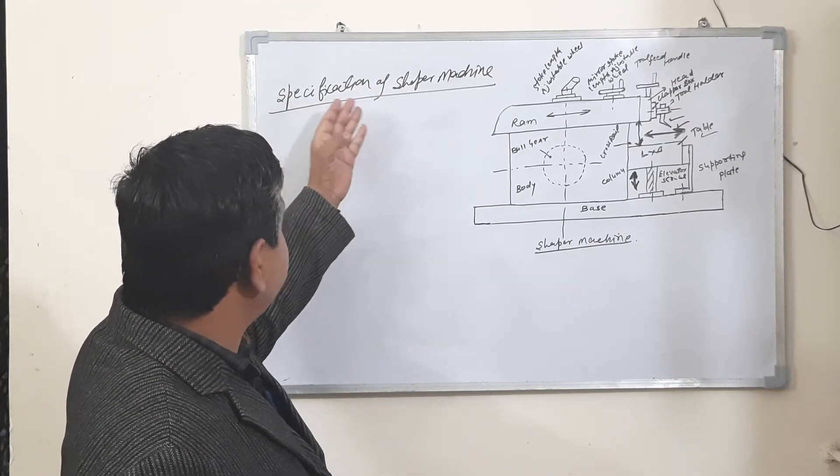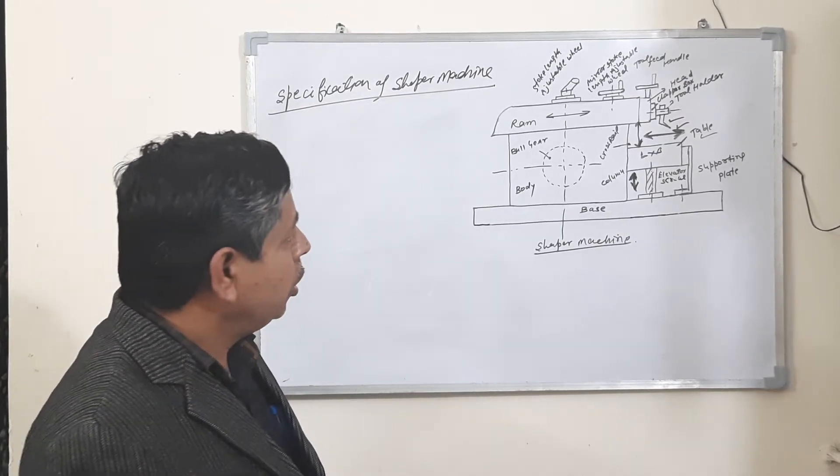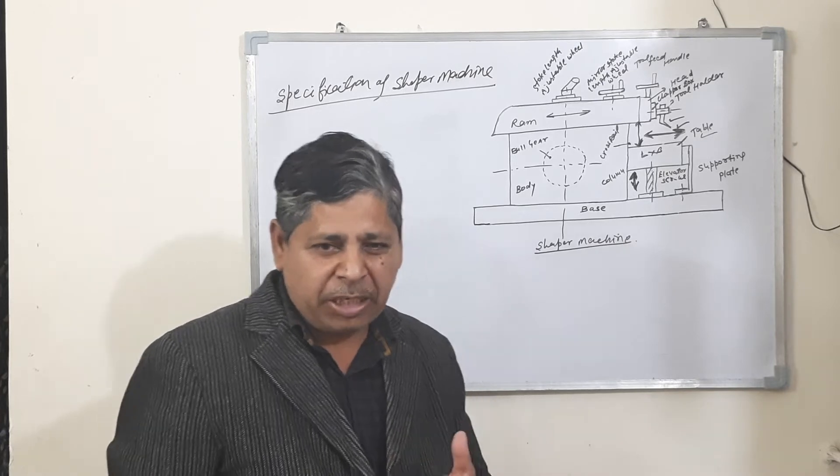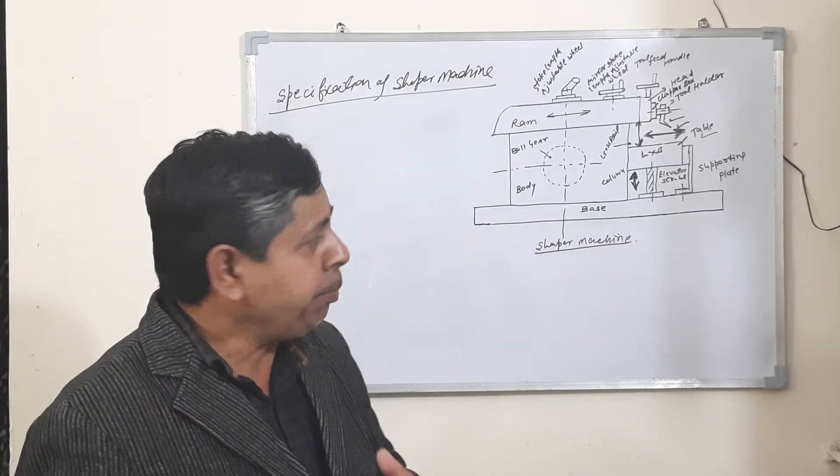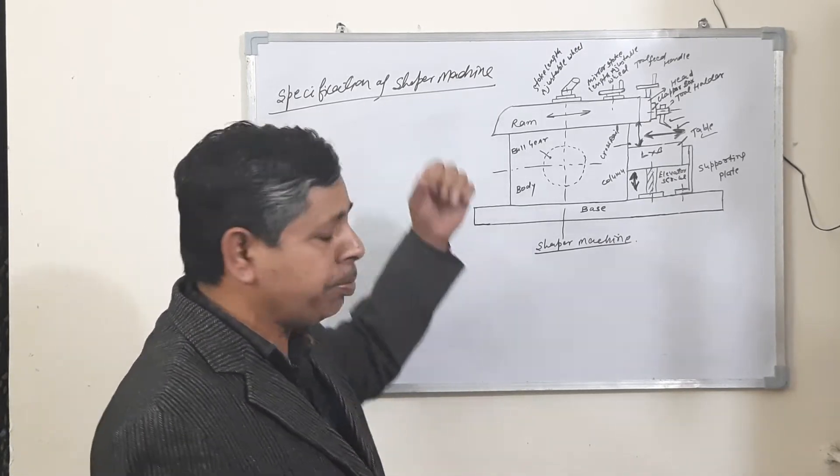My topic is specifications of shaper machines. All machines have shape, size, and dimensions. Dimensions means specific information about the shape of the machine.